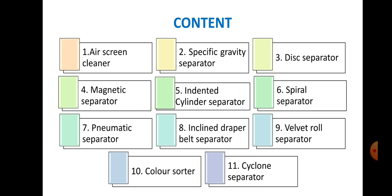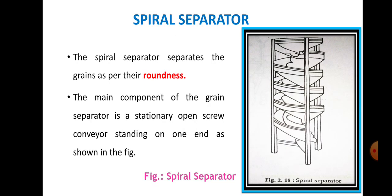So far we have covered the air screen cleaner, specific gravity separator, and the indented cylinder separator. As I mentioned, every separator works on some physical properties of biological materials. For example, the specific gravity separator works on the difference in specific gravity, and the indented cylinder separator separates grain based on differences in relative length.